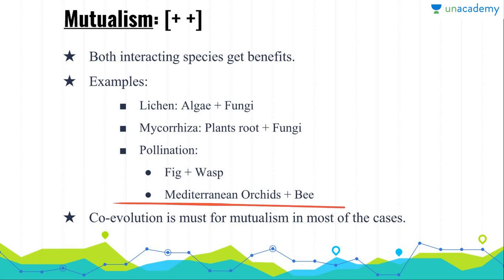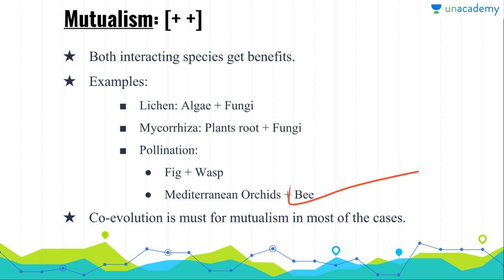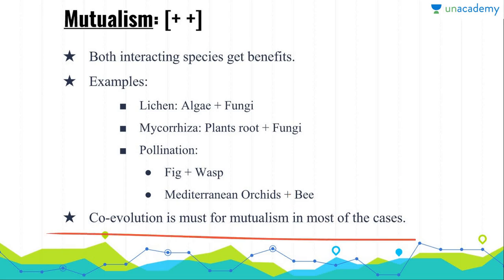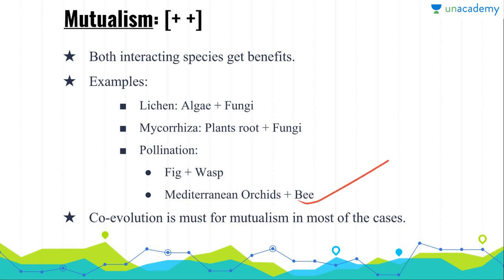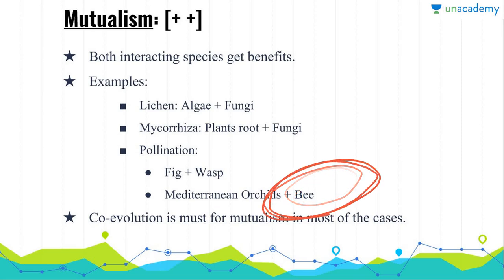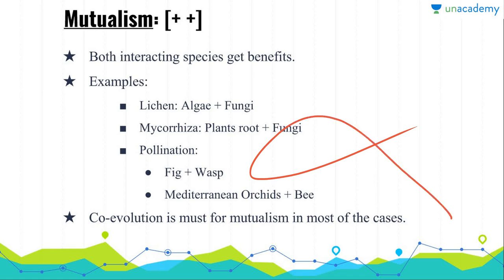In Mediterranean orchids and bees, the process of pseudo-copulation occurs because the Mediterranean orchid resembles one of its petals to a female bee. Co-evolution is most important for mutualism in most cases. Whenever the Mediterranean orchid fails to resemble its petal like the female bee, the male bee does not come for mating, and therefore pollination of the orchid will not happen.